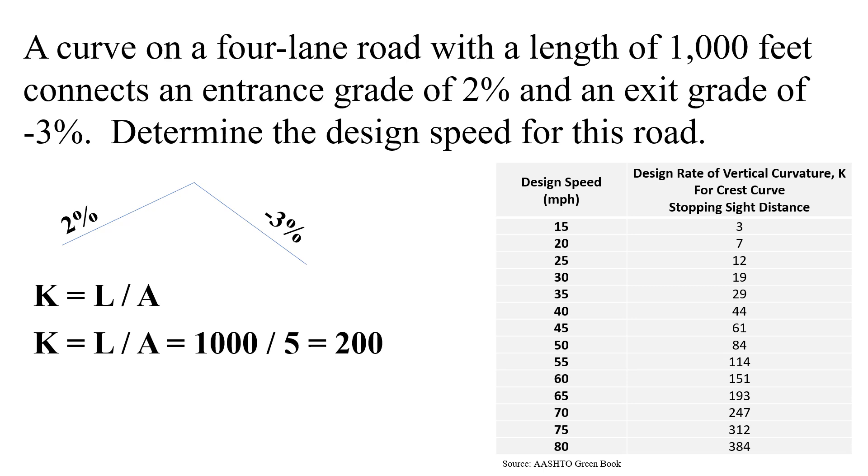And so we basically just need to look through this table and see where we're going to get to 200 for our rate of vertical curvature. And we see it just above 65 miles per hour for our design speed but it's well below 70. So this curve wouldn't meet the design specifications for 70 miles an hour. So the correct answer for this one is 65 miles per hour. We're actually a little bit more conservative than that so that's fine but our nearest design speed is 65 miles per hour.